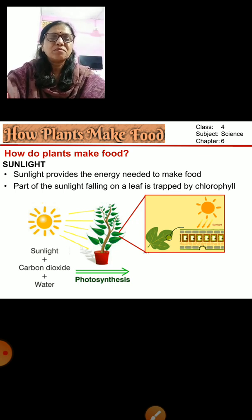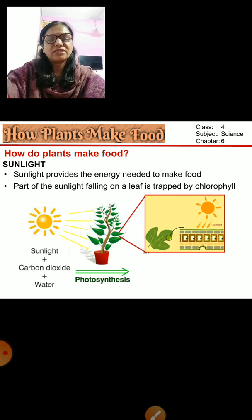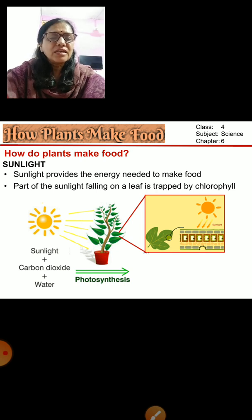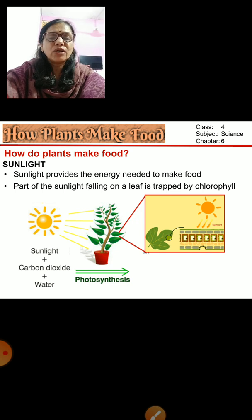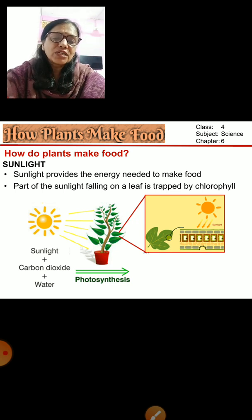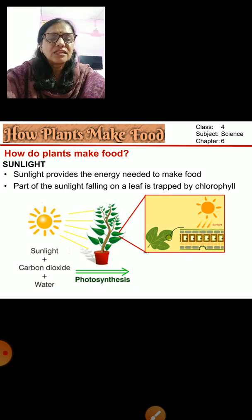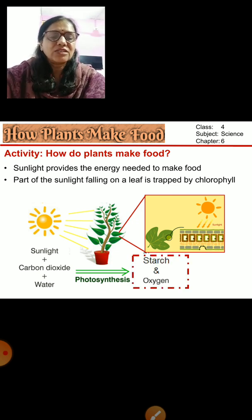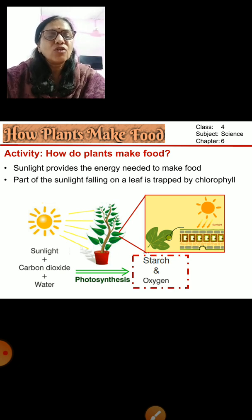Here is the equation: sunlight falling on the plant, plus carbon dioxide, plus water. In the process of photosynthesis, the products are starch or sugar, and oxygen is released. So starch and oxygen are the products obtained in the process of photosynthesis.